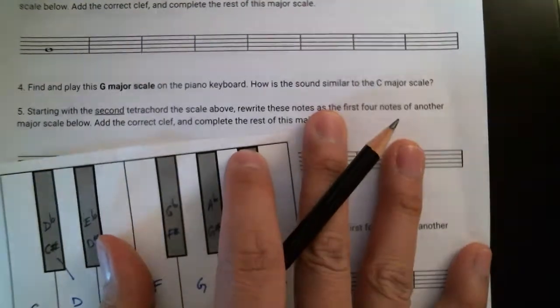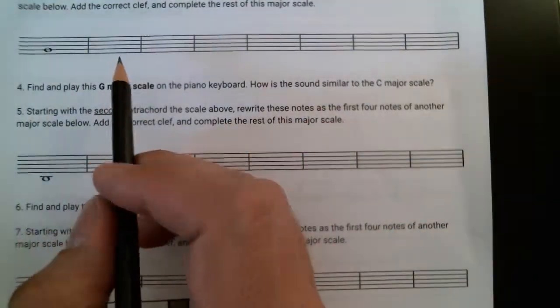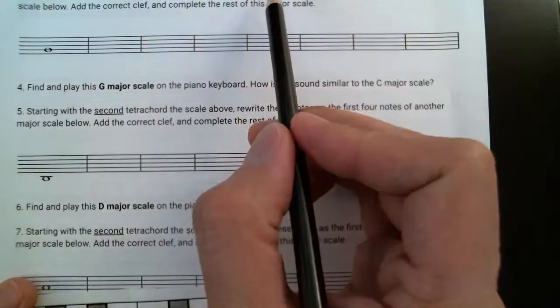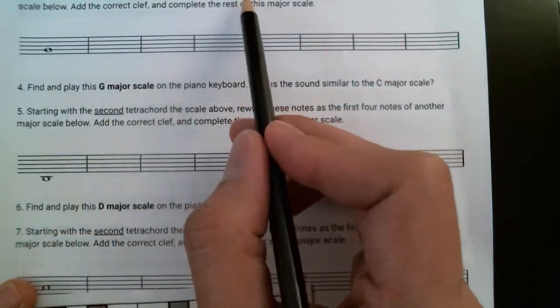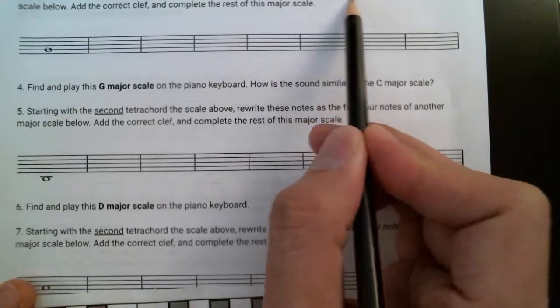So the next step is that I'm going to write, starting with the second tetrachord of the scale above, I'm going to rewrite these notes as the first four notes of a new major scale. I'm going to add the correct clef.